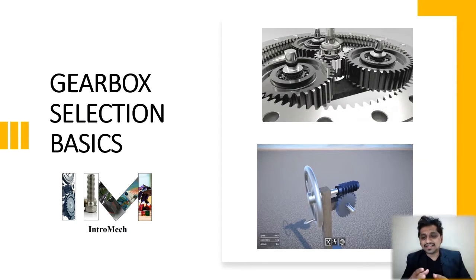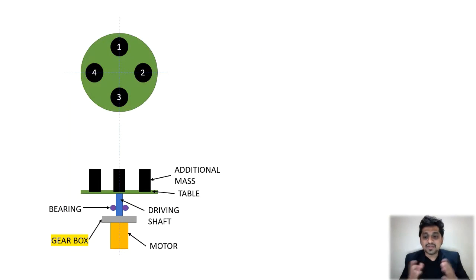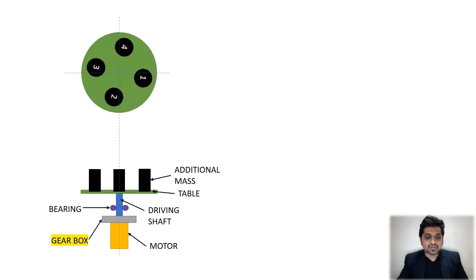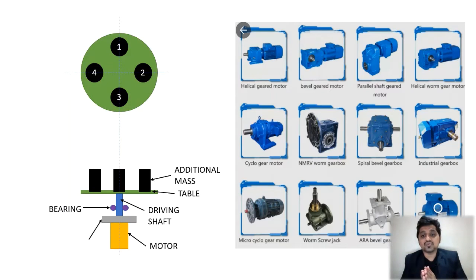Let's see how we can select a gearbox. In our application — which we've already seen in the previous video — we have an indexer that we want to rotate. We have a driving shaft, a gearbox, and a motor connected in series. There are different types of gearboxes available in the market, and selecting the right one depends on your required gear reduction ratio and the output torque.